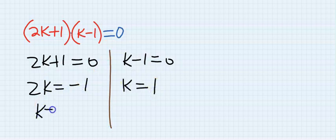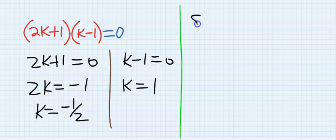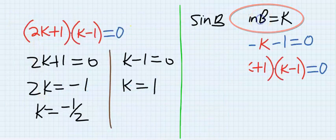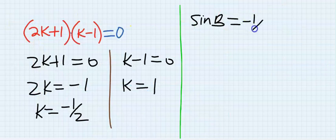2K equals minus 1, K equals minus half. But K was actually sin B, so from K we are going to have sin B is minus half.